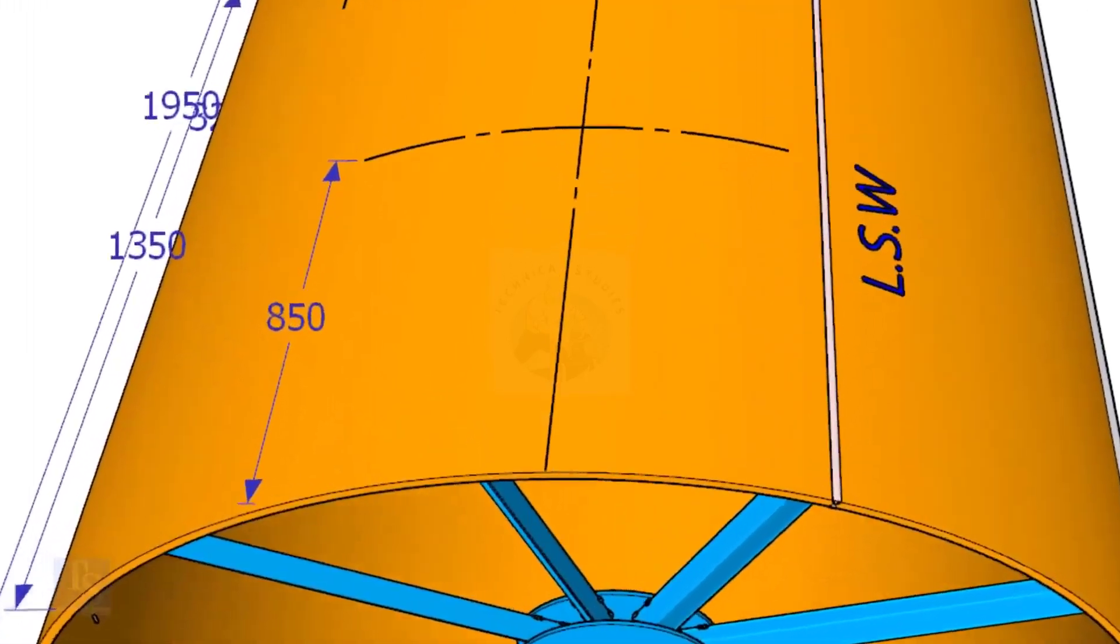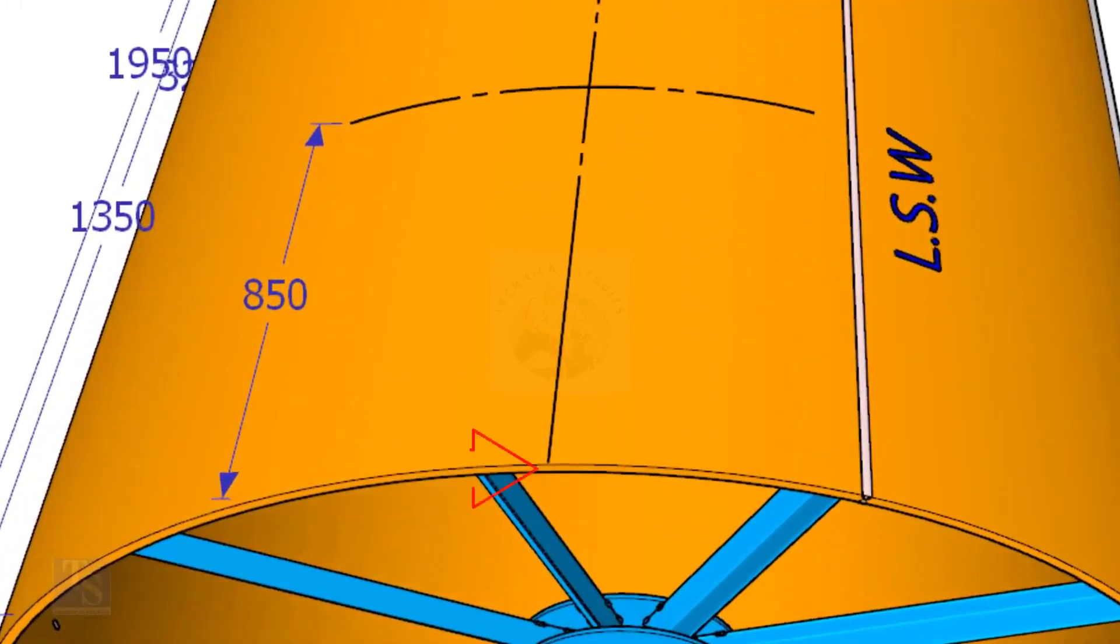Mark this distance on the end of the shell. Mark the same distance, roughly 850 millimeters away from the end of the shell, and draw a line.